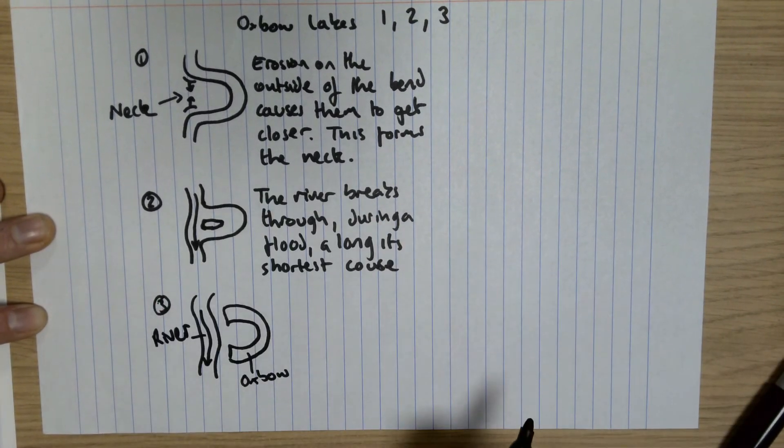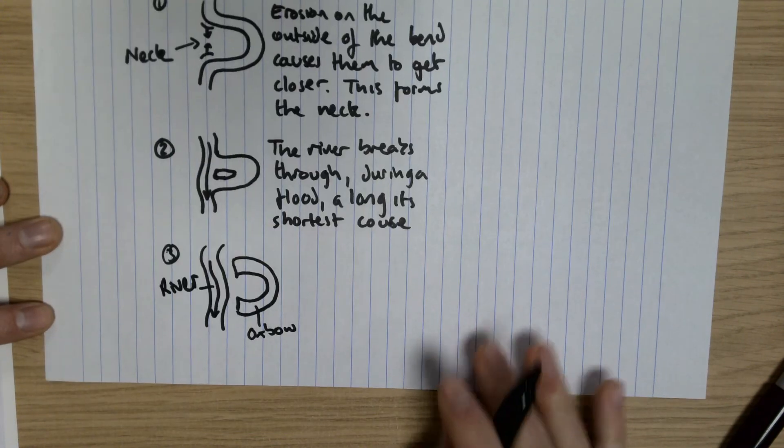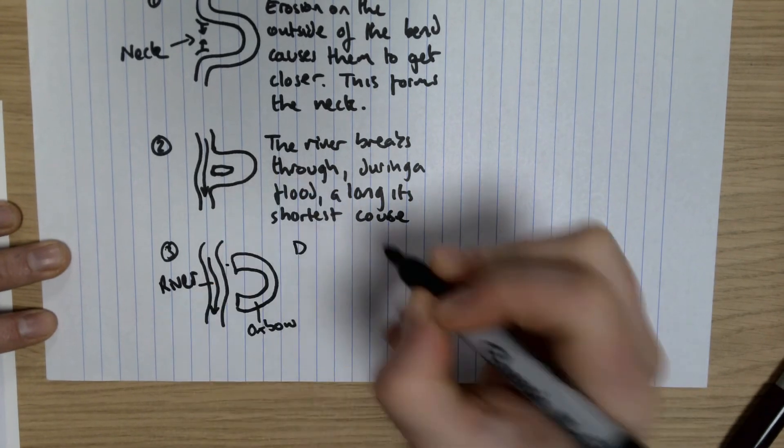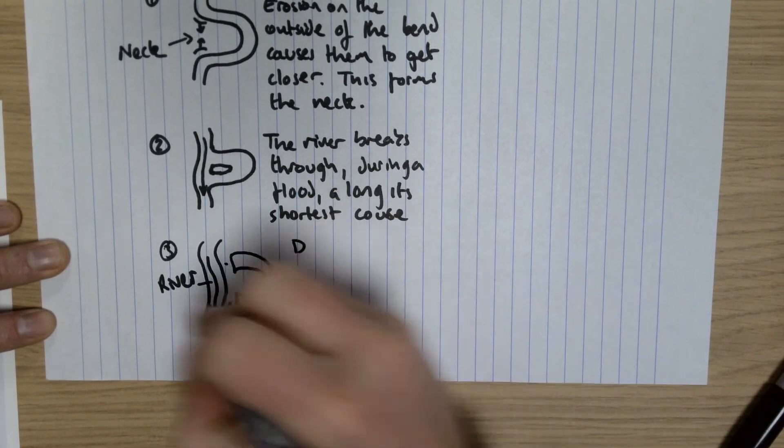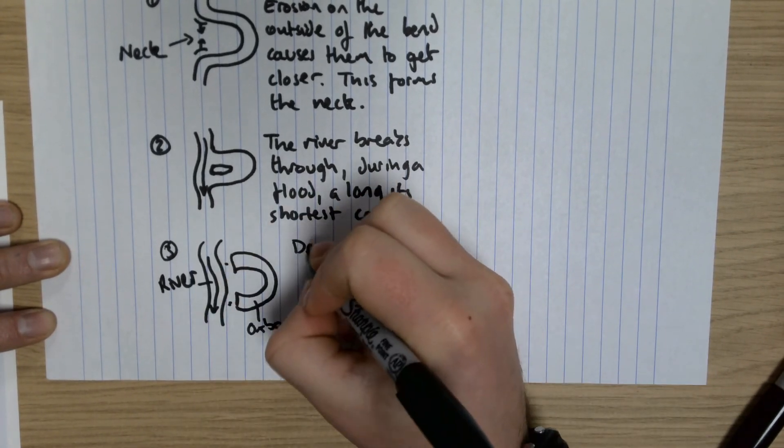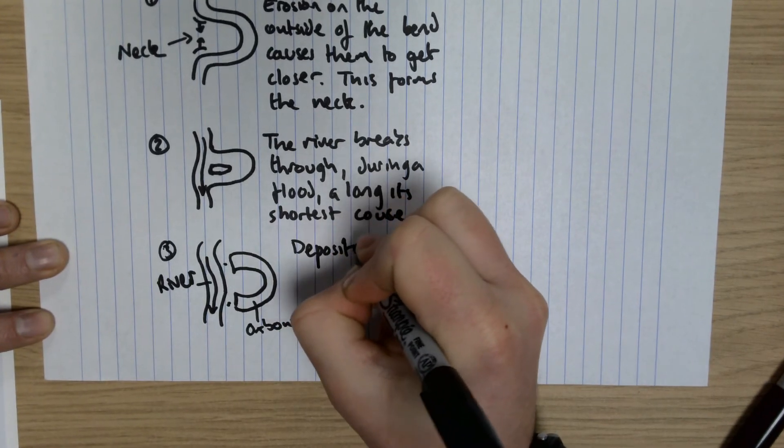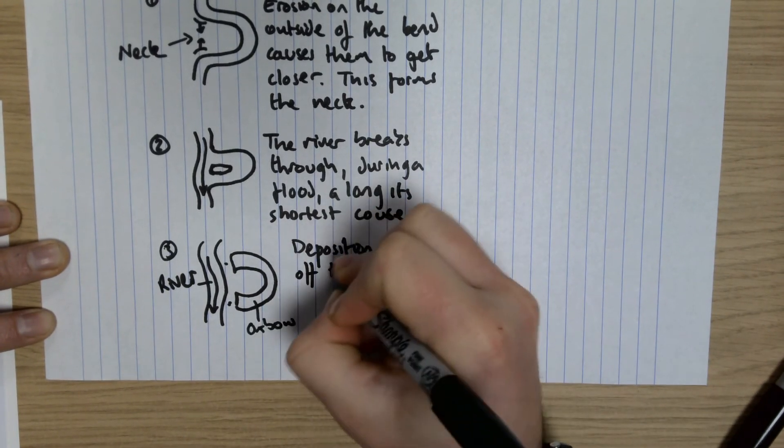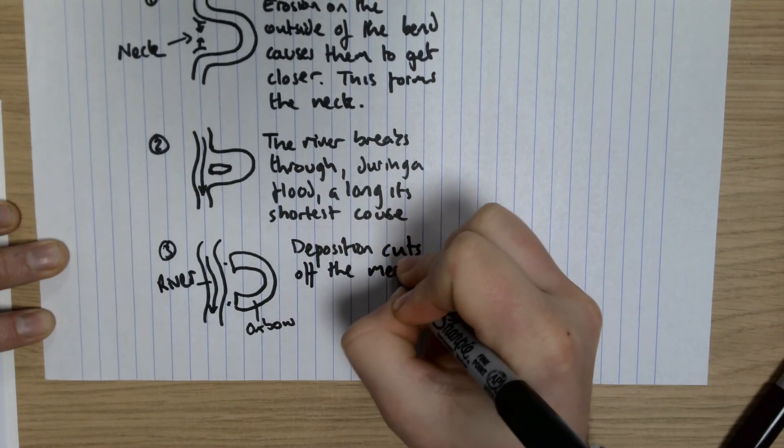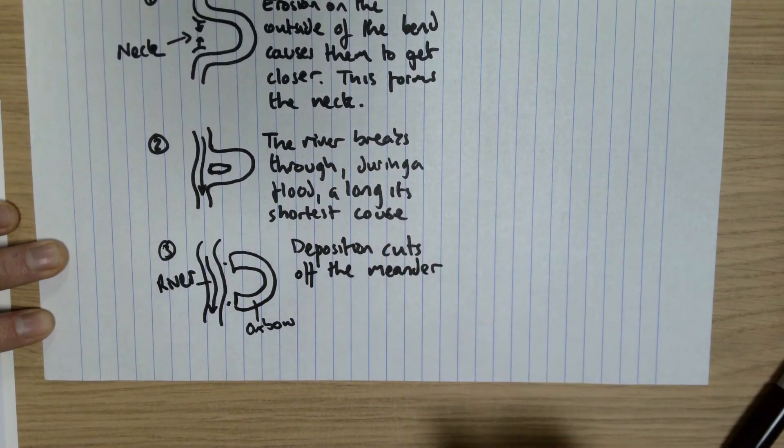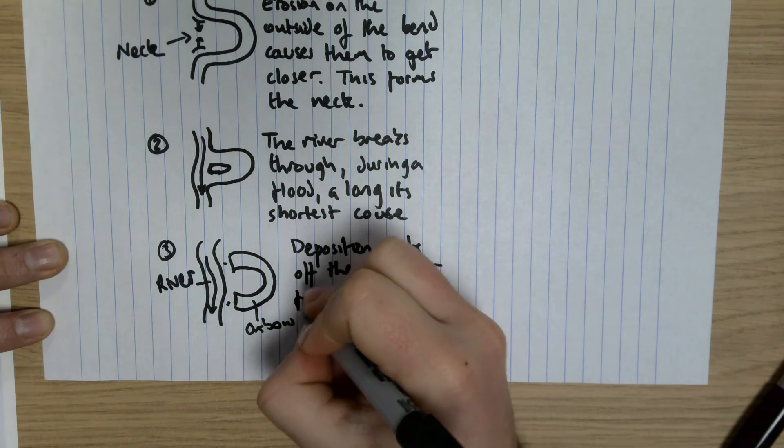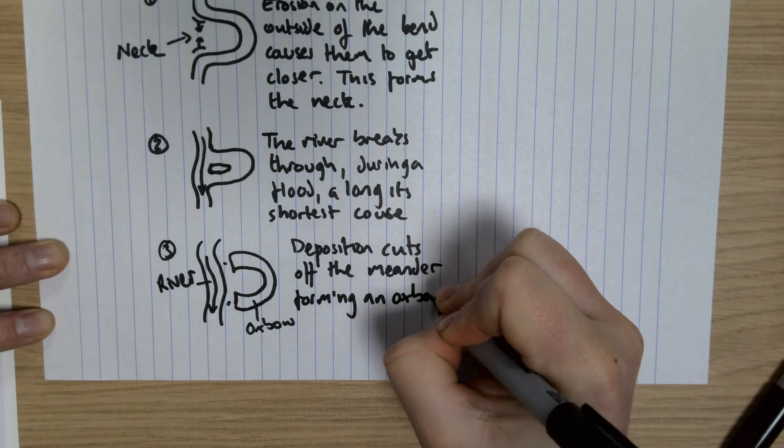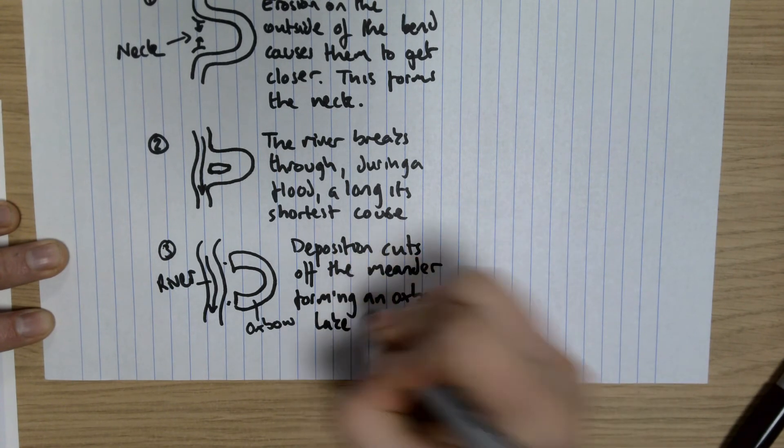And so we have deposition that's happening just here and just here - we have little beaches just there. In fact, deposition cuts off the meander, forming an oxbow lake.